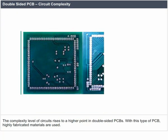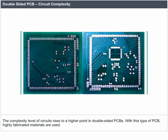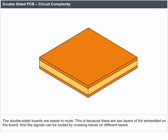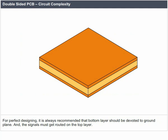Double-sided PCB circuit complexity: The complexity level of circuits rises to a higher point in double-sided PCBs. With this type of PCB, highly fabricated materials are used. The double-sided boards are easier to route because there are two layers of foil embedded on the board, and signals can be routed by crossing traces on different layers. For perfect designing, it is recommended that the bottom layer be devoted to ground plane and signals be routed on the top layer.